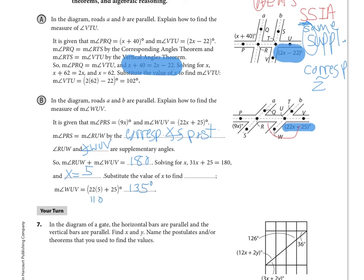Now it's your turn with number seven. Remember: if the lines are parallel, corresponding angles are congruent, same-side angles are supplementary, and alternate angles are congruent. Use those relationships to work through the problem, and I'll see you next time.